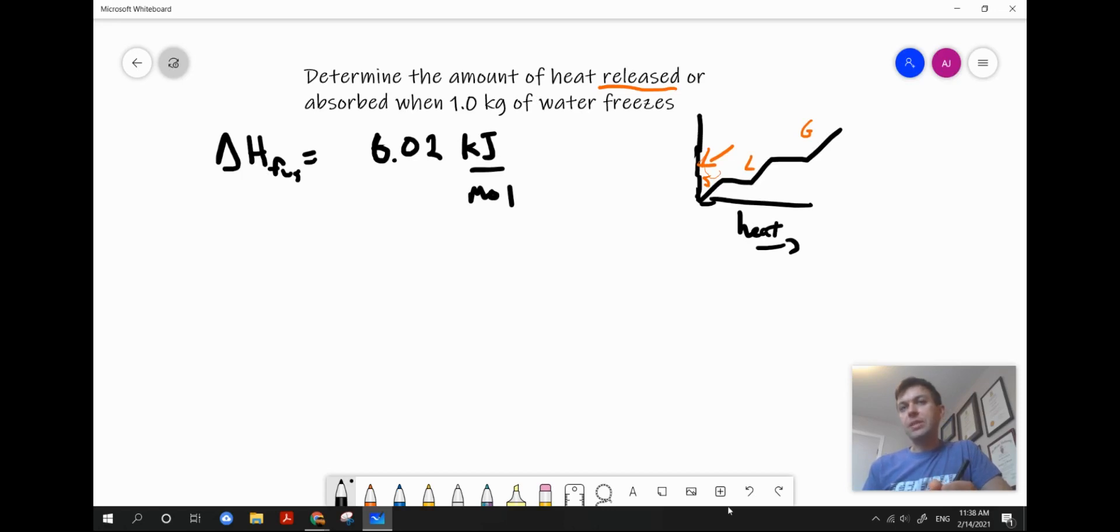Next, the heat of fusion is 6.02 kilojoules per mole. Now that is referencing, even though it says fusion here, moving from a solid to a liquid. It's talking about the energy that needs to be put in. When we change directions in terms of the energy flow, we need to change the sign as well. So we're going to do that here.